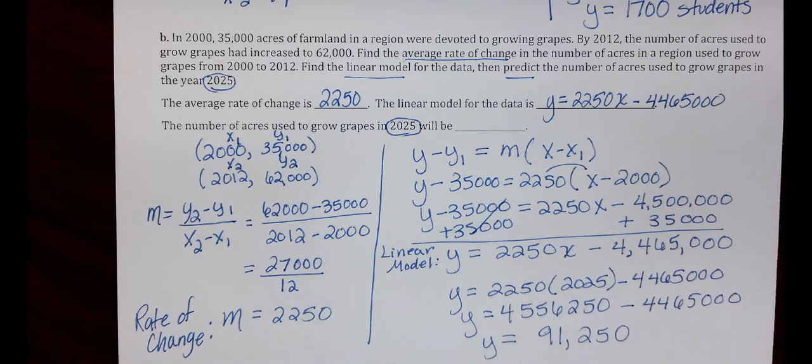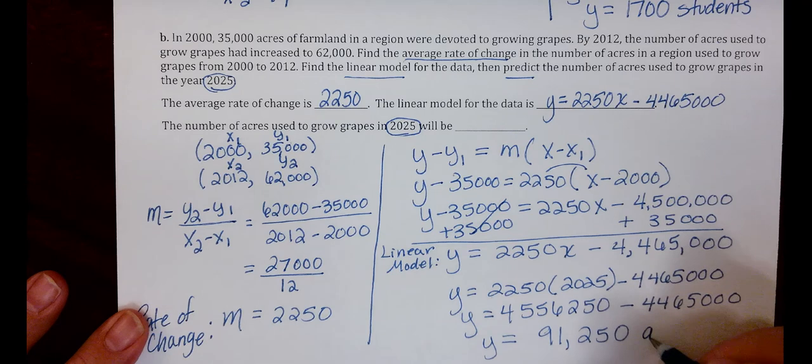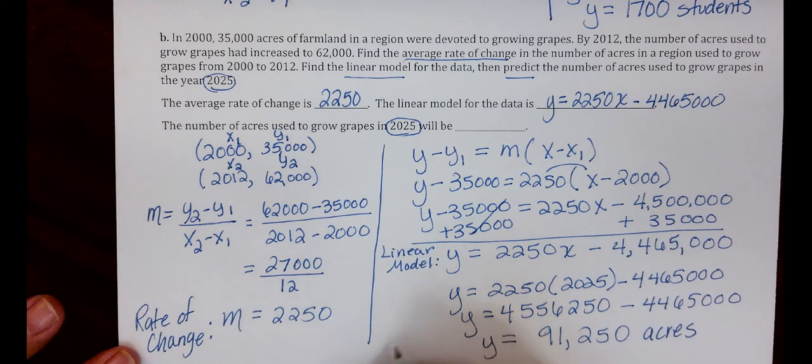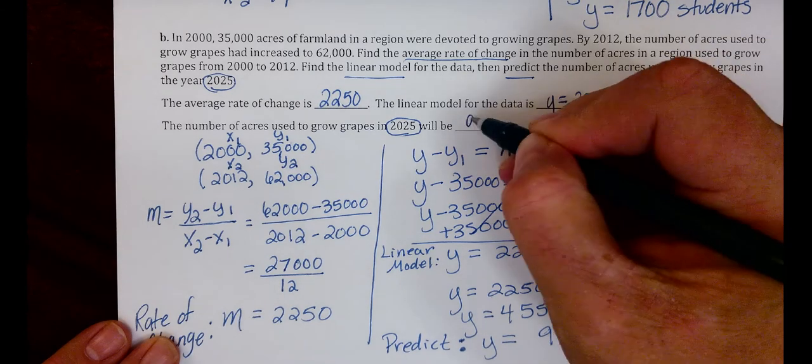This was solving for Y. Y is the number of acres used to grow grapes, so we're going to say 91,250 acres. This was our prediction on the number of acres used to grow grapes in 2025. This answer will be 91,250.